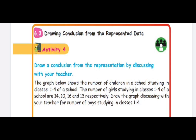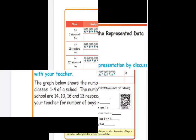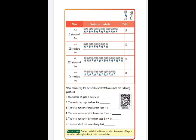The next topic is drawing conclusions from represented data. Activity 4: draw a conclusion from representation by discussing with your teacher. The graph shows the number of children in classes 1 to 4 of a school. The number of girls in class 1 to 4 are 14, 10, 16, and 13. You need to discuss with your teacher and write the number of boys, then draw the graph.